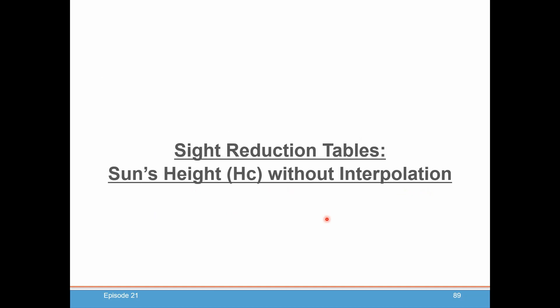Next week, we will continue with the sight reduction tables and we'll figure out what our sun's calculated height Hc above the horizon should be, but without doing any interpolation for minutes and tenths of minutes of declination. We'll get to that, but let's start simple and just do Hc without any interpolation. We'll see you next week and I hope you enjoyed doing those exercises.